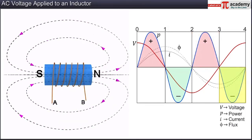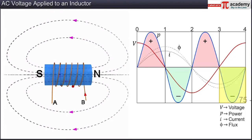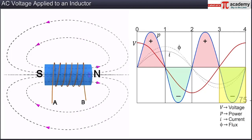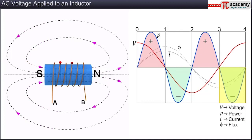During the last time interval 3-4, the value of the current decreases and reaches zero. As the current is negative while the voltage is positive, it means that the power is negative. Hence, energy is again being released from the inductor. The cyclic discharging and charging of the magnetic field of the inductor in reverse polarities keeps on taking place as long as there is AC current flowing through the inductor.